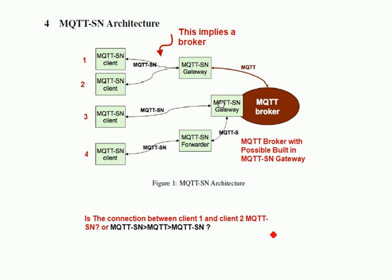We've got an MQTT-SN client and another one, and they're talking to a gateway. Notice the message transfer seems to be between the client, via the gateway, to the other client — and that means the gateway is functioning as a broker.